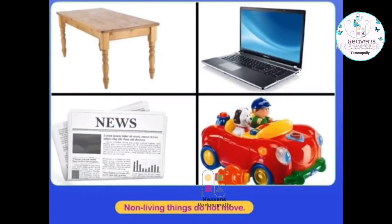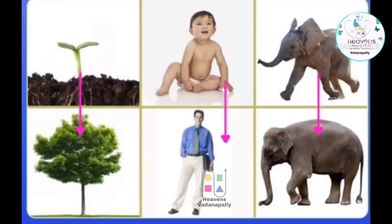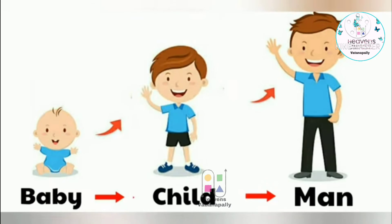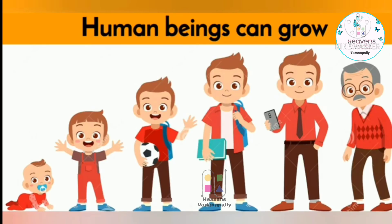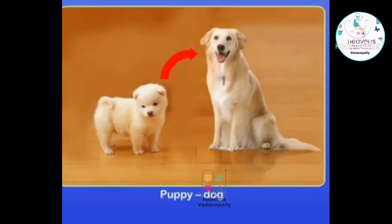Non-living things do not move. The next characteristic of a living thing is they grow — they grow into their adult form. See how we humans grow into adult form, from baby to a man. Cows grow big to become cows.